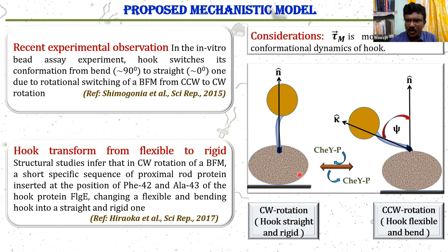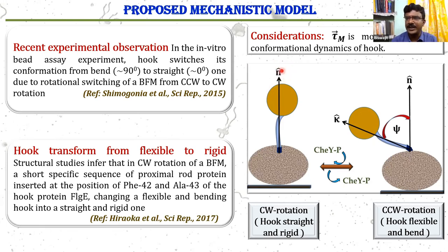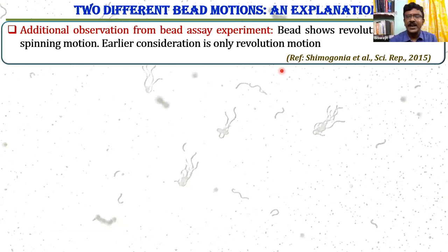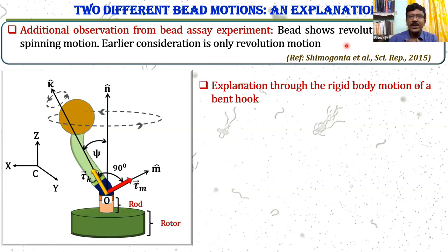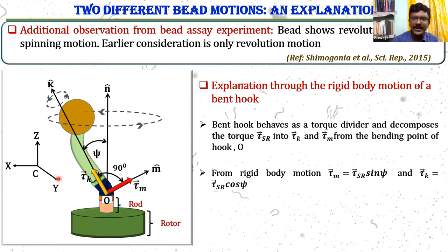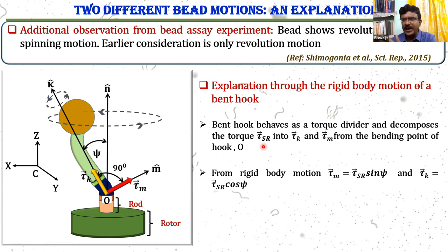We propose a mechanistic model: in the CCW rotational mode the hook becomes straight and rigid, whereas in the CW rotational mode it becomes soft and bent, making an angle ψ with the motor rotational axis. In vitro bead assay experiments show both revolution and spinning motion. If the hook behaves as a top-like divider, then the torque produced by stator-rotor interaction can be divided into τK (responsible for spinning motion) and τN (responsible for revolution motion). This revolution motion is similar to top dynamics.